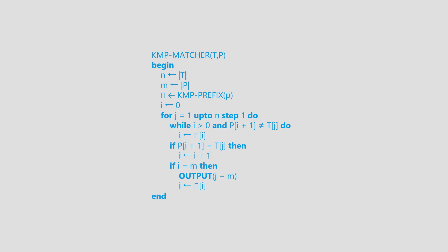Let's try to write the code of the KMP algorithm. We begin with assigning values to our string, pattern, prefix table, and position indicators i and j. j keeps incrementing within the length of the string. When a mismatch happens, we keep skipping back within the pattern. If we have a temporary match, we move to the next character. If we find a full match, we output it and look for the next match.